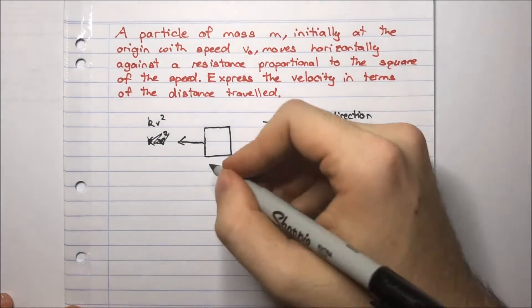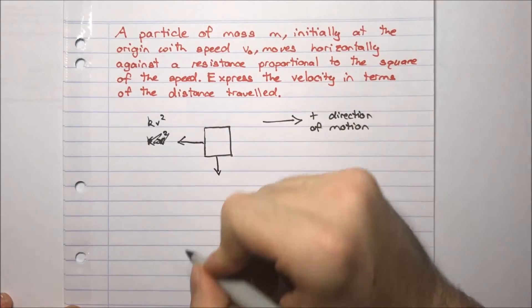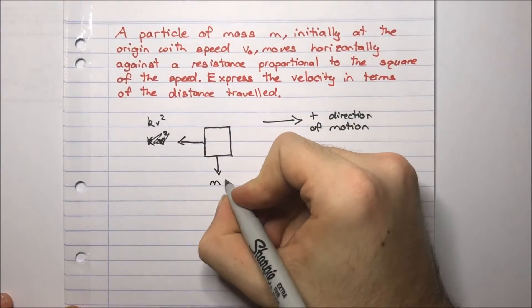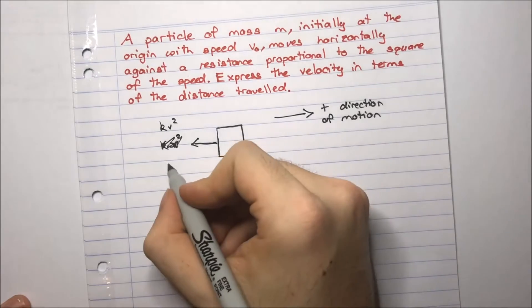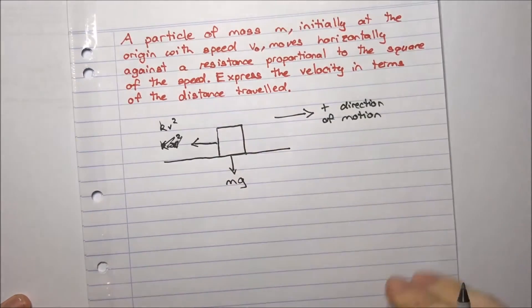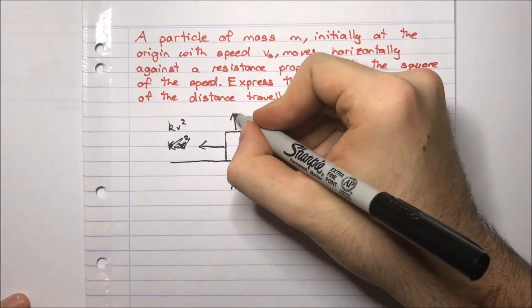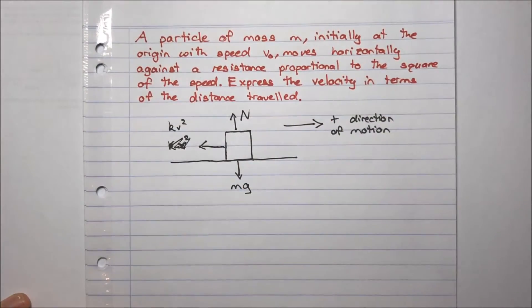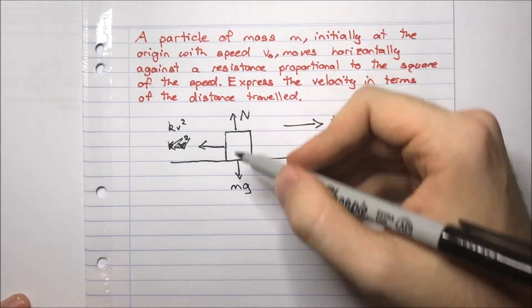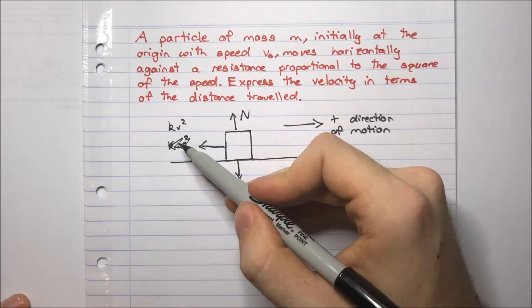What else do we have? We have the force of gravity acting down. And whenever we have a particle which should be on the ground, it has a normal force acting upwards. So I have a normal force, force of gravity, and a resistive force here.